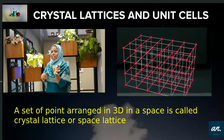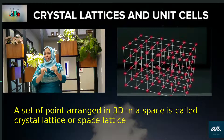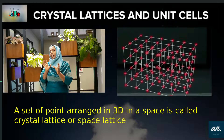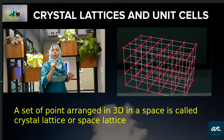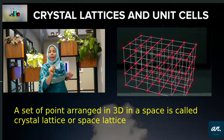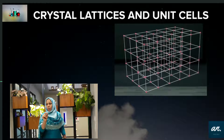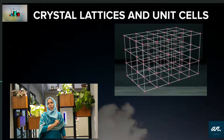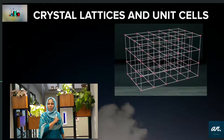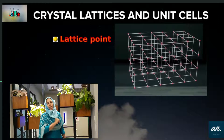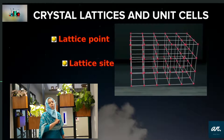Crystal Lattices — what is it? Crystal Lattices, also called Space Lattices, is a set of points arranged in three-dimensional space. These points are called lattice points.